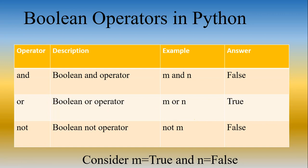The last one is the Boolean not operator. The Boolean not operator will return true if the value is initially false, and it will return false if the value is initially true. Here, m is true, so the Boolean not operator will return false. If m was initially false, then the not operator would have returned true.